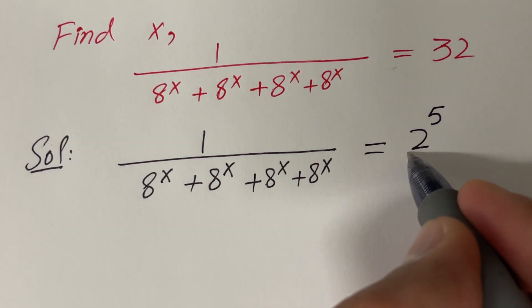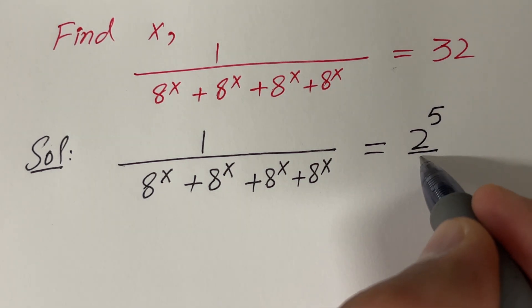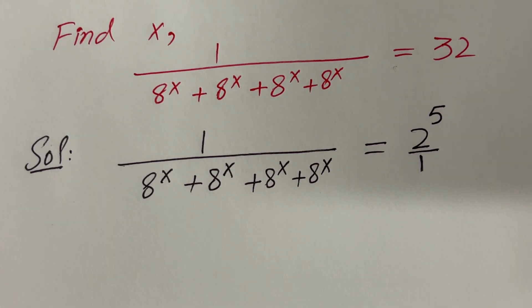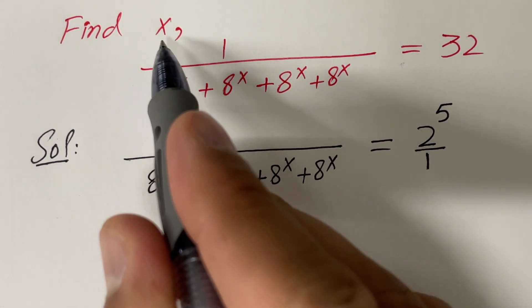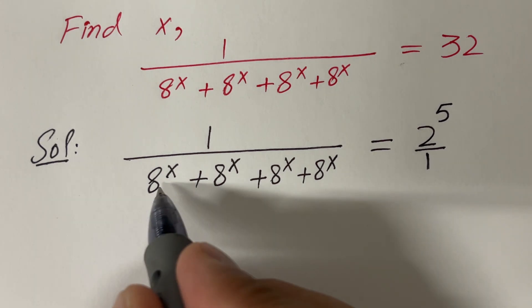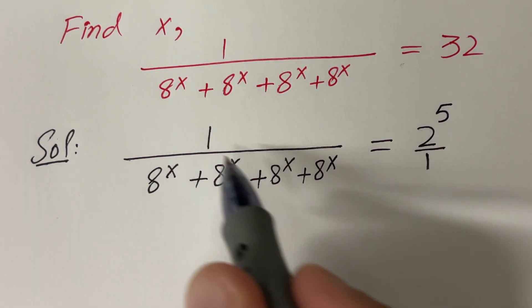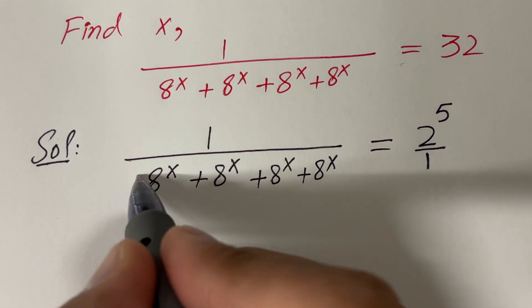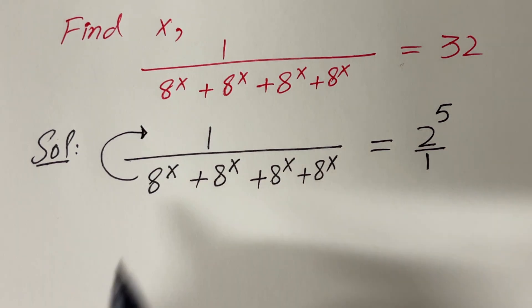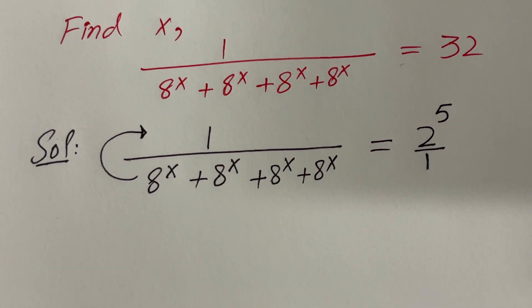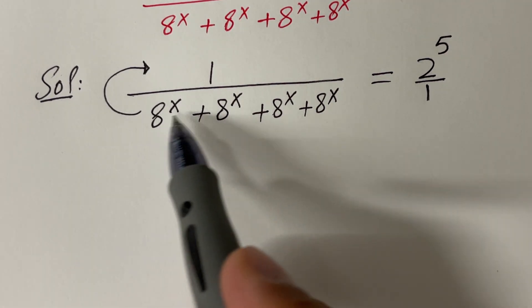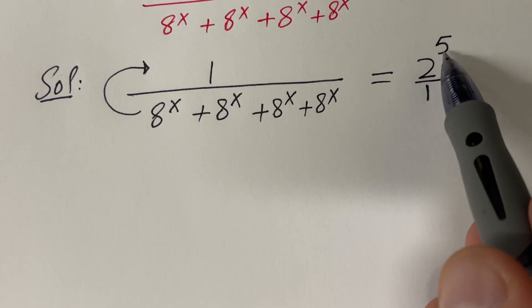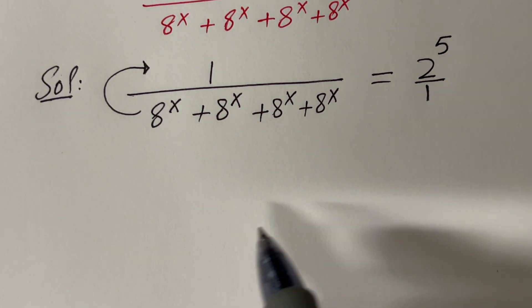If you don't have anything in the denominator, that means the denominator is just 1. We want to find the value of x, and it will be easy if we move these terms to the top — then we can find x easily. In other words, we have two fractions: 1 over something equal to 2 raised to the power 5 divided by 1.